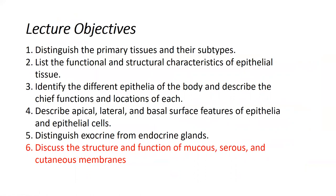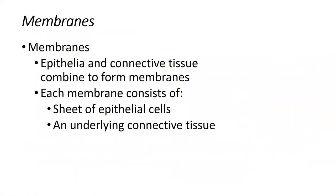Our last objective is to talk about the three membranes. A membrane is an epithelium and its underlying connective tissue. Epithelial cells are avascular — they do not have blood supply — so they must receive their nutrients and oxygen and diffuse their waste through the underlying loose connective tissue. The connection of this epithelium and the connective tissue underneath together forms a membrane.